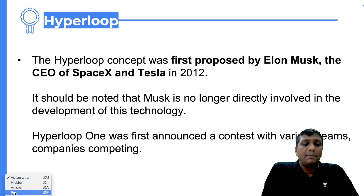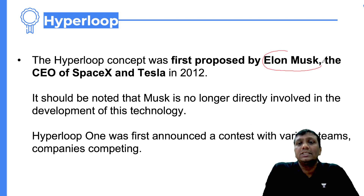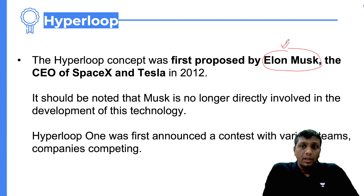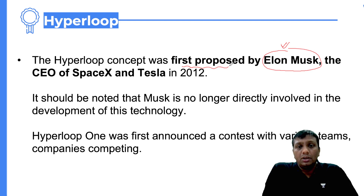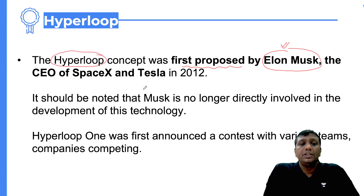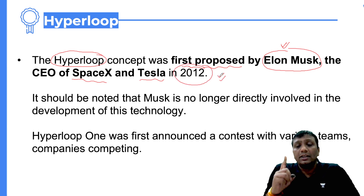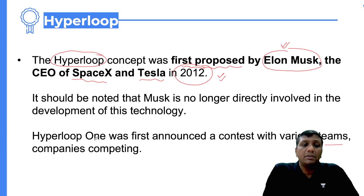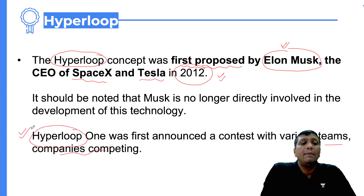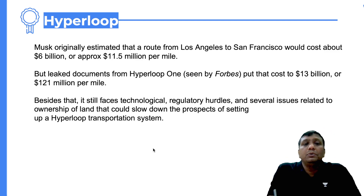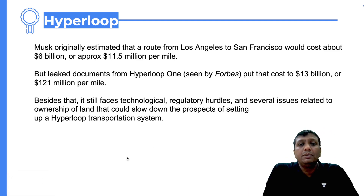Before starting this topic on hyperloop, we cannot miss the name of Elon Musk — the discussion would never be complete without him. Elon Musk first proposed the concept of the hyperloop. He is the CEO of SpaceX and Tesla Motors. This announcement was around 2010, about 10 to 12 years back. The technology would require a lot of teamwork and many companies working together to make the hyperloop project successful.